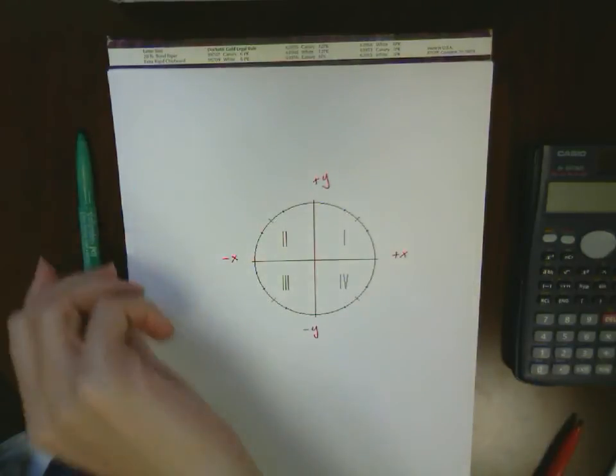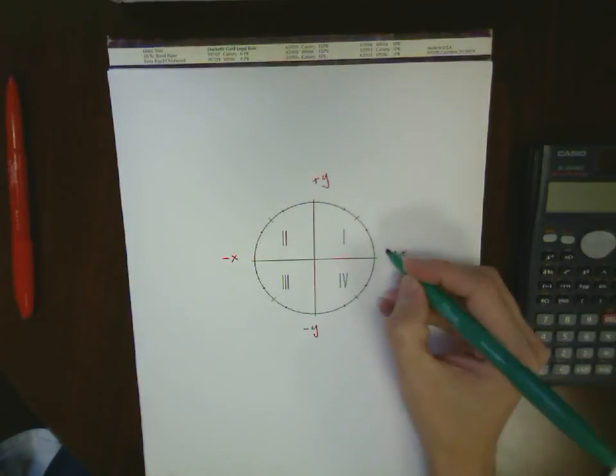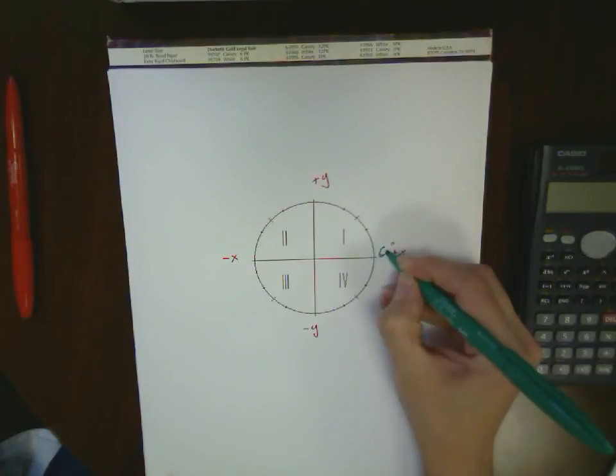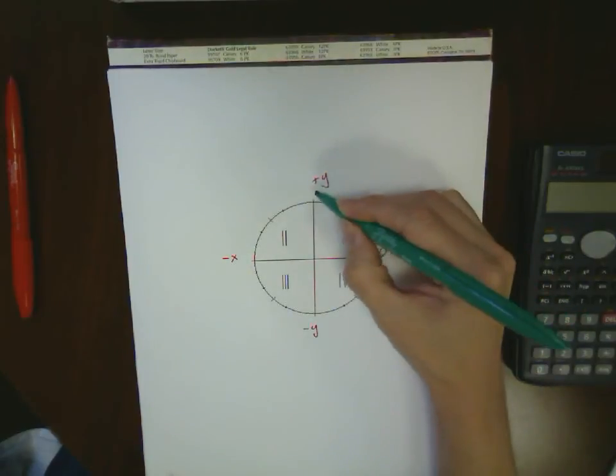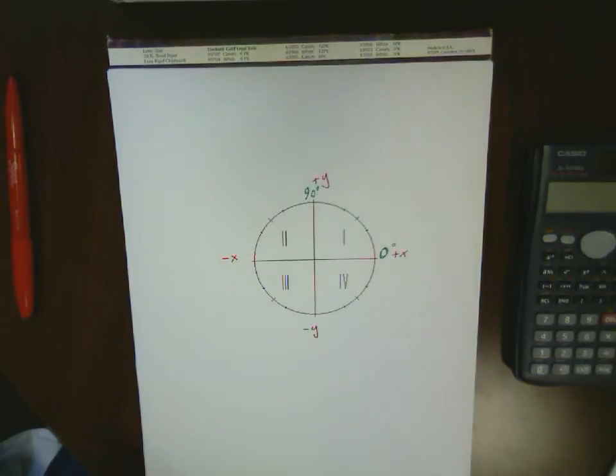Now if we take a look at our angles in standard polar coordinates using degrees, we start off at zero degrees and go from values from zero degrees up to 90 degrees for our first quadrant.